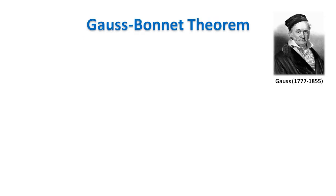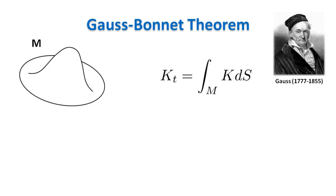The Gauss-Bonnet theorem is a remarkable theorem that links the curvature of a surface with its underlying topology. Given a manifold M, we define the total curvature kT of M to be the integral of the Gauss curvature over the surface. In this video, we are interested in the version of the Gauss-Bonnet theorem for compact two-dimensional manifolds without boundaries.